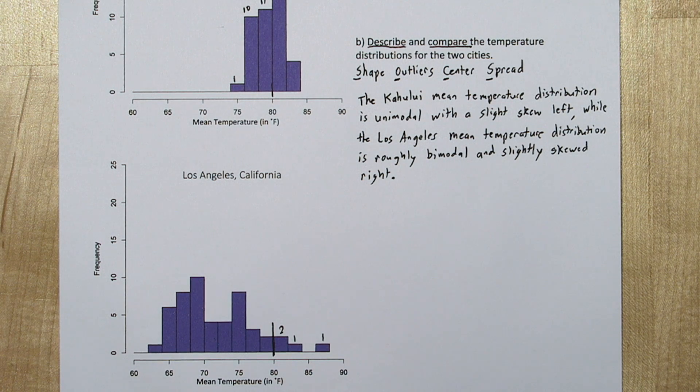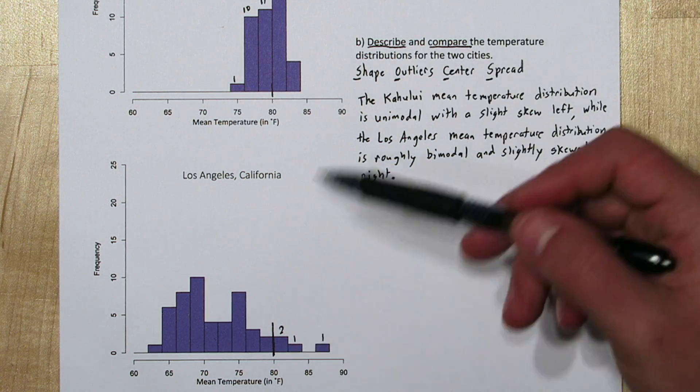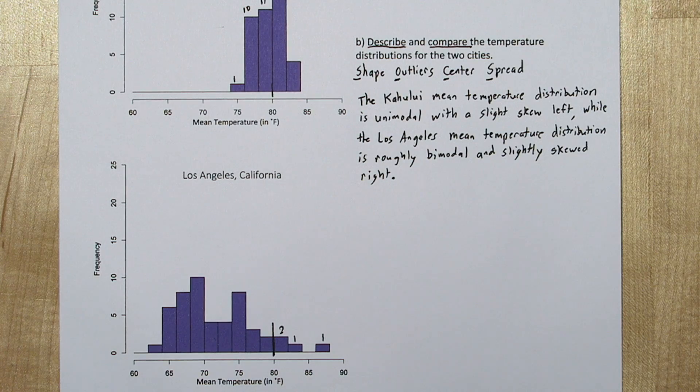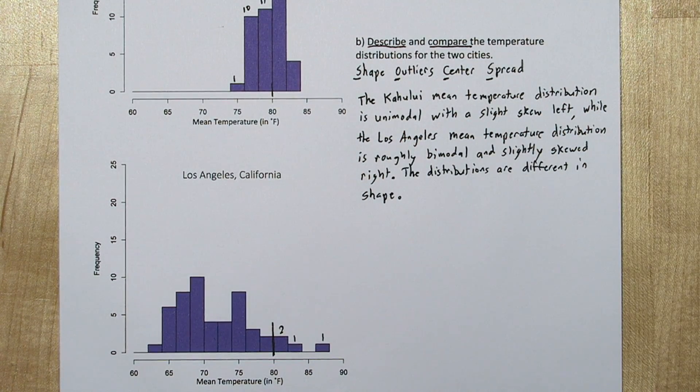So far all we've done is describe the two distributions independently. We're also asked to compare. Really the only comparison we can make is that the distributions are different in shape. Now that we've talked about shape, let's tackle center next.